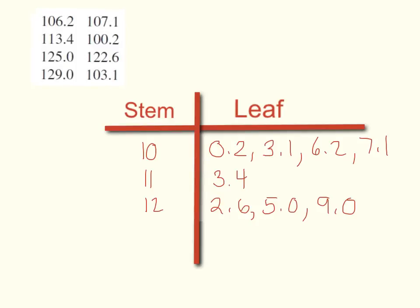Next I'll look at the next one. My next stem is obviously 11, because that's what comes next. I only have one number that's between 110 and 120. That's this number, and it gives me the stem 11 and the leaf 3.4.